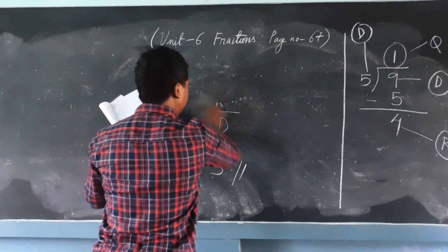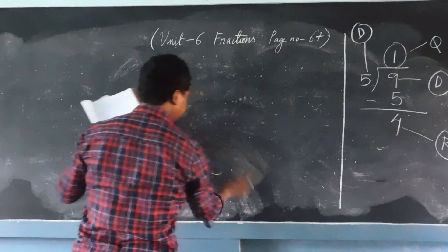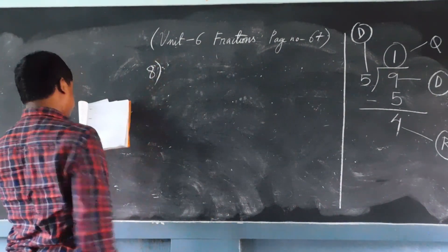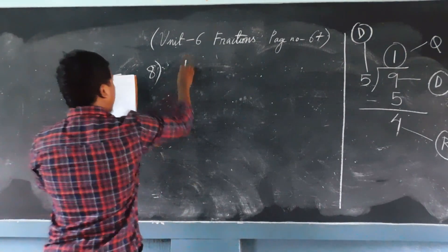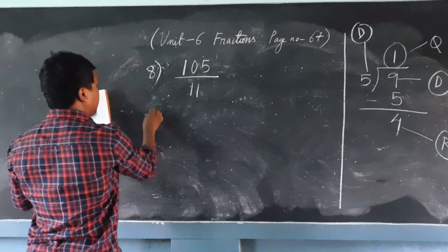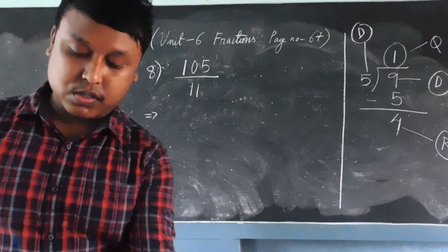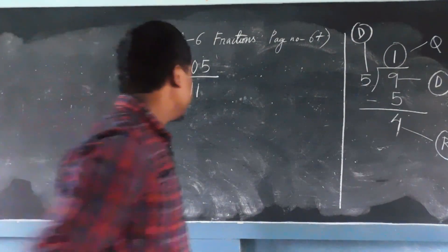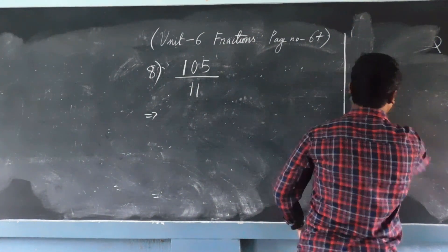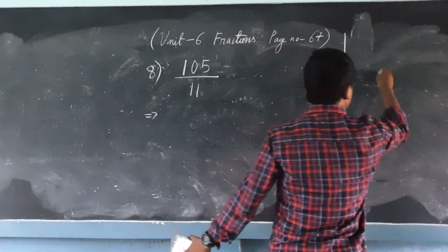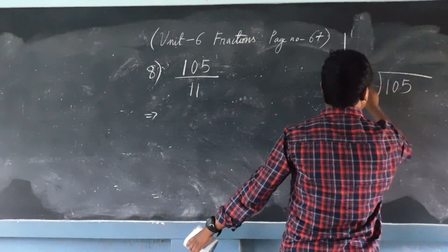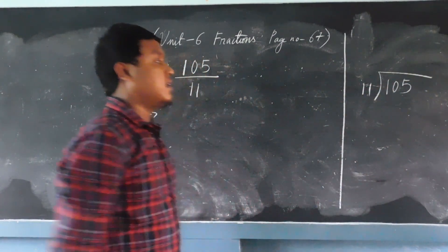Next — question number 8, the last one. That is 105/11. We will do the same step — just go through a rough column and divide 105 by 11. Same way: simple division of 105 by 11.